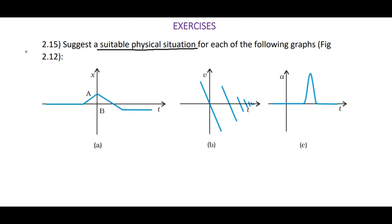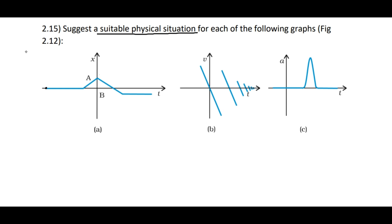In the first xt graph, I am naming this point P and this point Q. Between P and Q, this line is along the time axis, which means the particle or body is at rest. I am naming this point R. Between Q and R, there is a constant slope, which means the body is moving with uniform speed or uniform velocity.